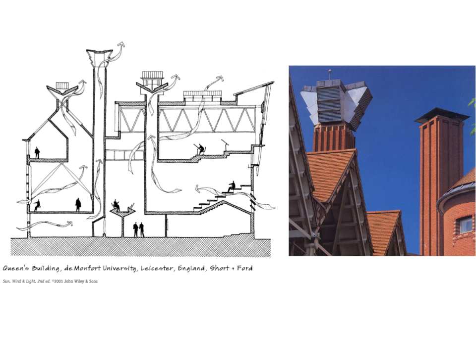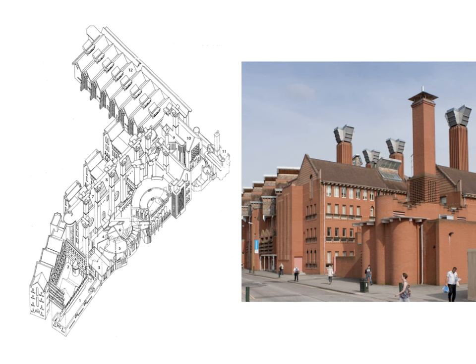Perhaps the most extreme example of a stack ventilated building is the Queen's Building at De Montfort University by Shorten Ford, who consult extensively on stack and natural ventilation and passive cooling. The auditorium section shows air brought in from the exterior wall underneath, rising up through the risers in the seating so the coolest air comes right under occupants' feet, then out through a dedicated chimney with controlled light and acoustics. Upper levels have tall rooms with clerestories and dedicated chimneys — a symphony of stack ventilation strategies.